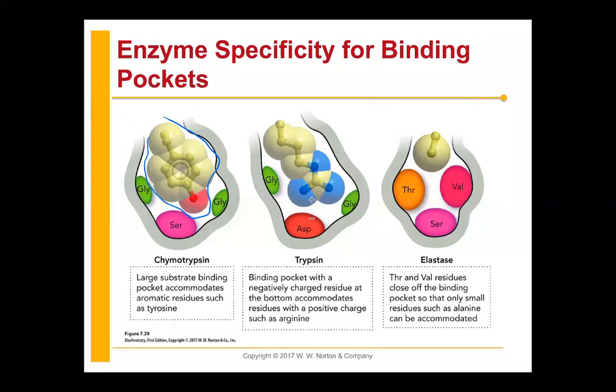Think about trypsin, on the other hand. Trypsin has a binding pocket with a negatively charged residue. If trypsin has a negatively charged residue, what's it going to do? It's going to accommodate residues that have a positive charge — like arginine, like lysine. So it's going to cleave proteins at peptide bonds that border positively charged residues.